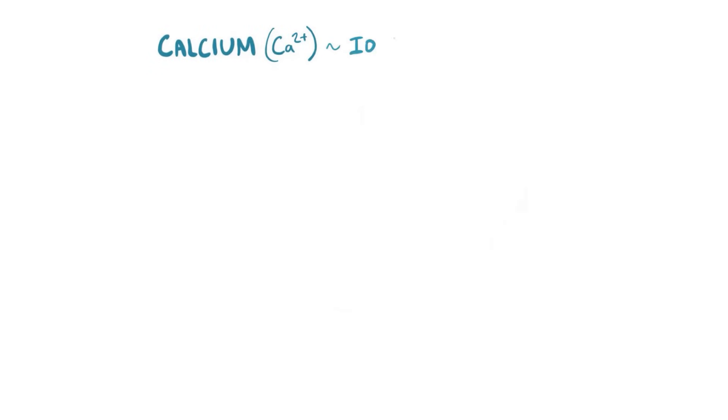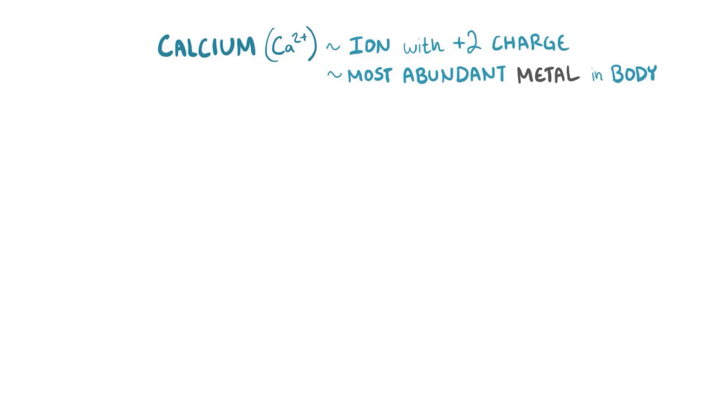Calcium exists as an ion with a double positive charge, Ca2+, and it's the most abundant metal in the human body.